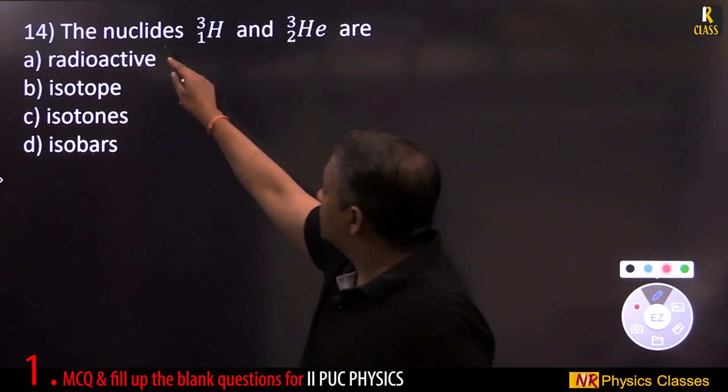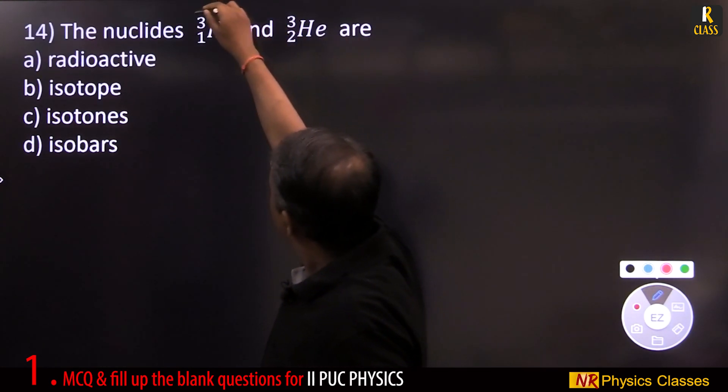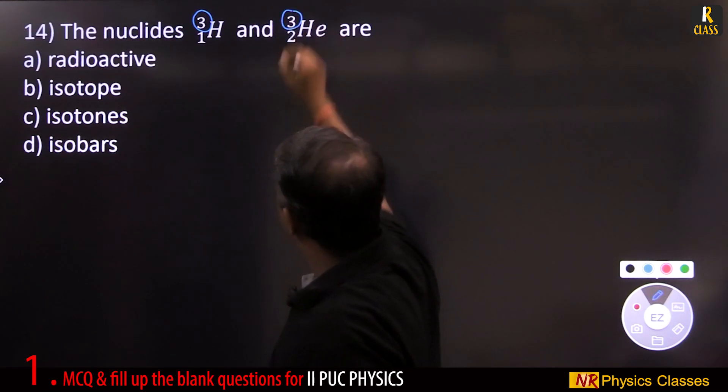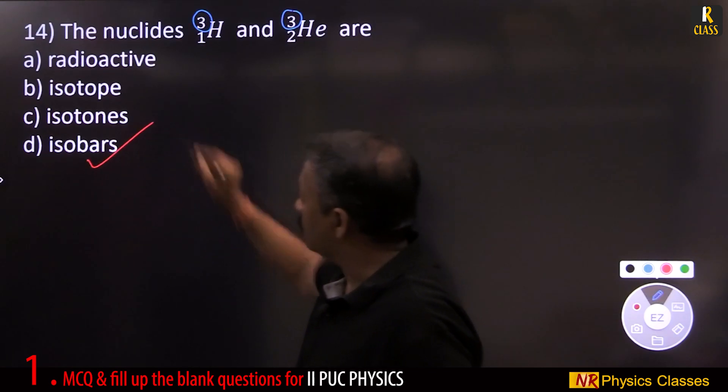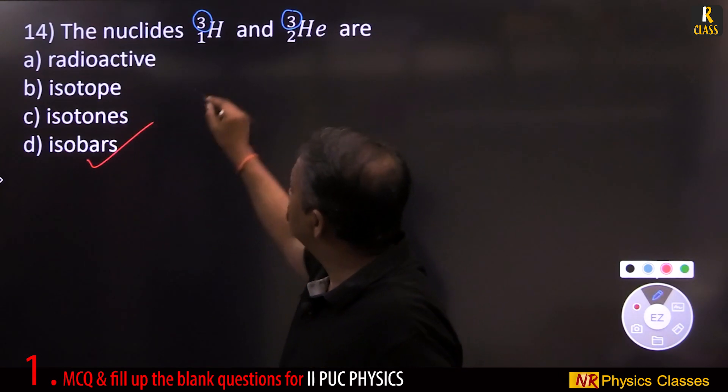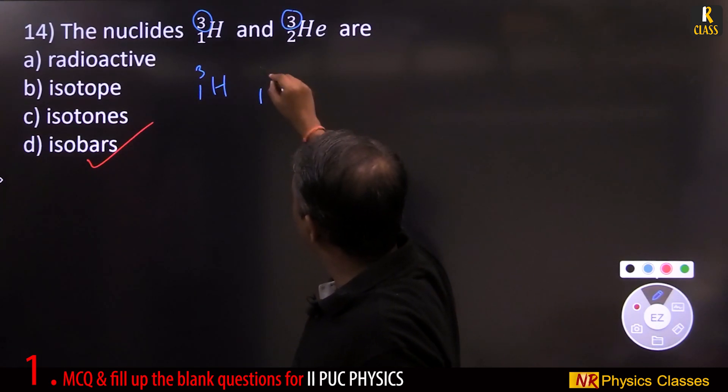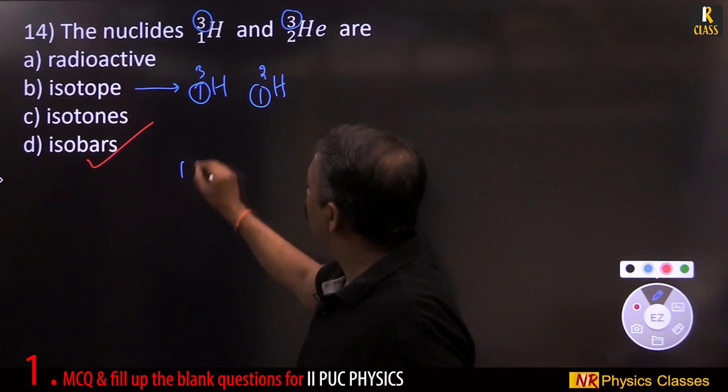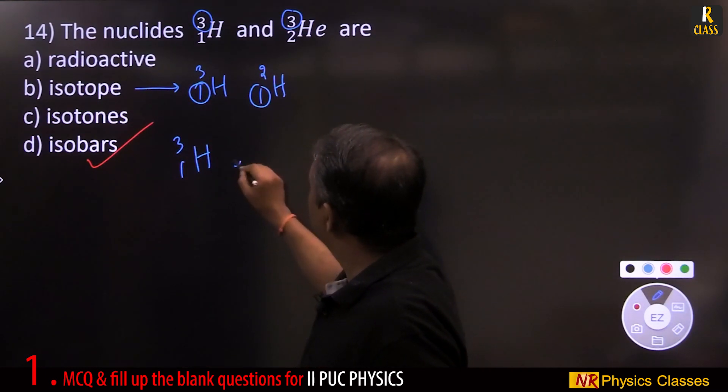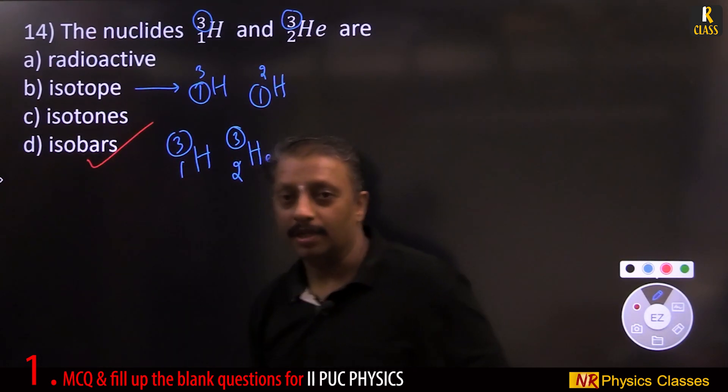The nuclides, this and this are - see, same mass number. Radioactive, isotope, isotone, isobar. Isotope means 1H3, 1H2, 2H3. So these two should be same: isobar.